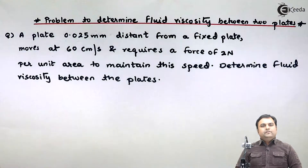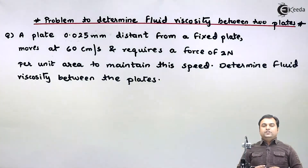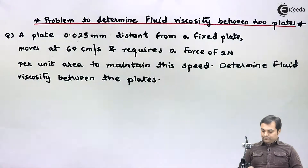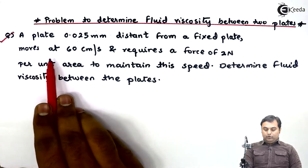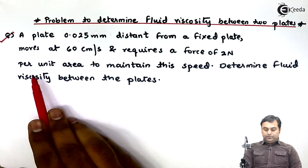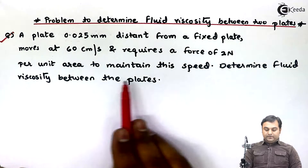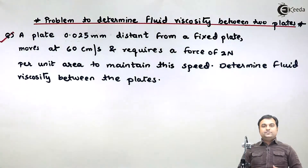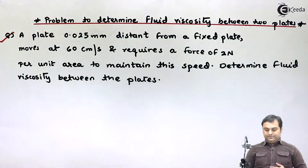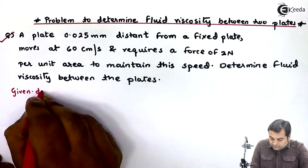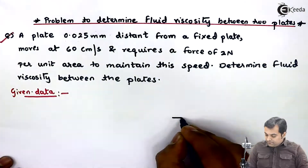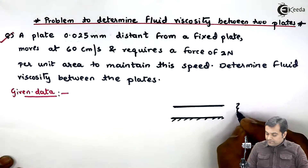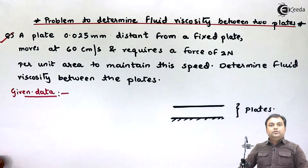Hello friends. In this video we will see a problem in which we have to calculate the viscosity of a fluid which is flowing between two plates. The question states: a plate 0.025 mm distant from a fixed plate moves at 60 centimeters per second and requires a force of 2 Newton per unit area to maintain this speed. Determine the fluid viscosity between the plates.